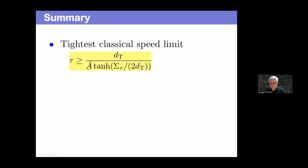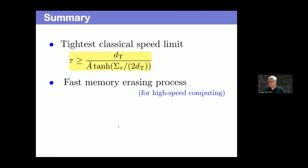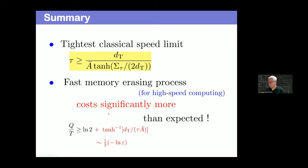In summary, we found the tightest classical speed limit. We believe it is tight because in the two-state (one-bit) example, the bound can actually be touched, meaning no better bound exists for this system. From this study, we learn that high-speed computing requires very fast memory erasure, which costs significantly more than expected due to divergence — however, because this is a logarithmic divergence, it is rather tolerable. Thank you.